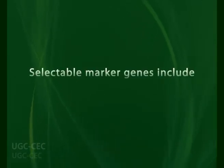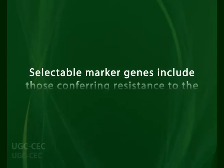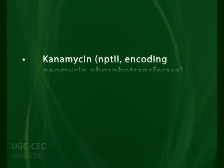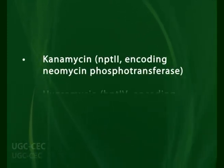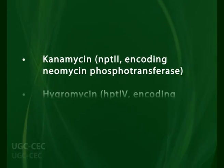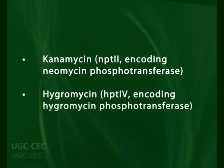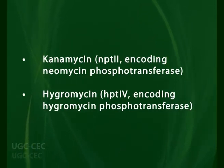The selectable marker genes include those conferring resistance to the antibiotic kanamycin — NPTII, which encodes neomycin phosphotransferase — and hygromycin — HPT, which encodes hygromycin phosphotransferase isolated from E. coli.